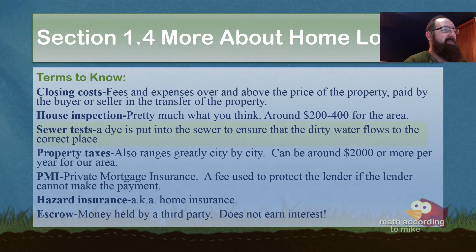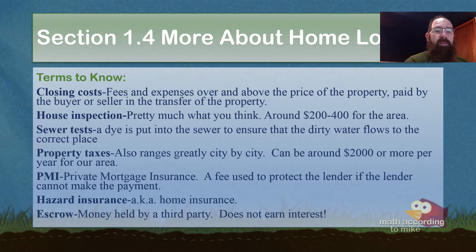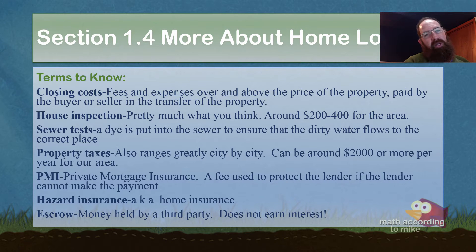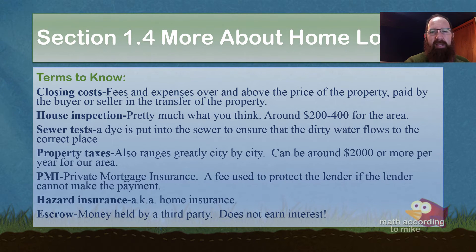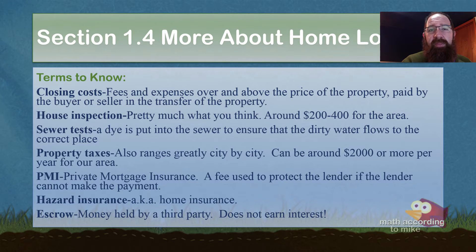Next up is sewer tests. A dye is put into the sewer to ensure that the dirty water flows to the correct place — meaning they don't want clean water going where processed water goes, or dirty water from your toilet going where clean water goes. This is done by the city, and it's usually the seller who pays for this one.